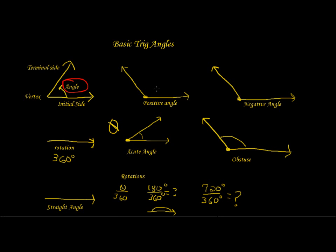If your terminal side comes up and away from your initial side, you have a positive angle. If it comes down and away from your initial side, you have a negative angle. This is equivalent to clockwise being positive and counterclockwise being negative.